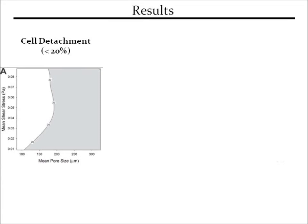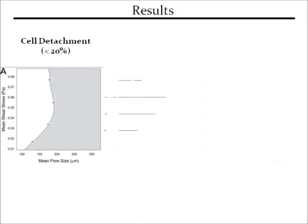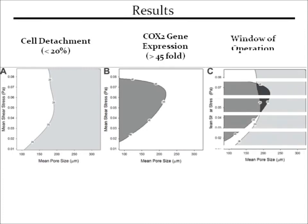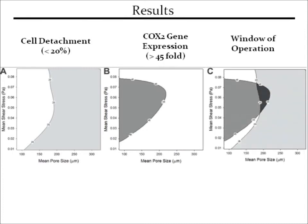Similarly, setting a minimum increase in COX2 gene expression to 45-fold gives us a feasible operating region defined by the dark grey region. Overlaying these plots, we are then able to determine that a small feasible window of operation, as identified by the black region, exists that allows both criteria to be met simultaneously.